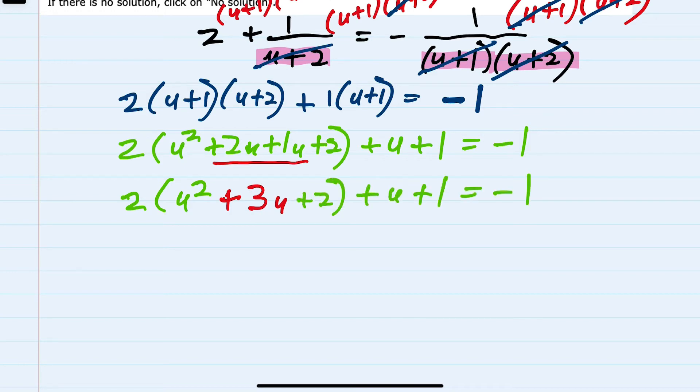I'll continue to simplify by first multiplying. 2 times u squared is 2u squared. 2 times 3u is 6u. 2 times 2 is 4. And I will bring the rest of the problem down.